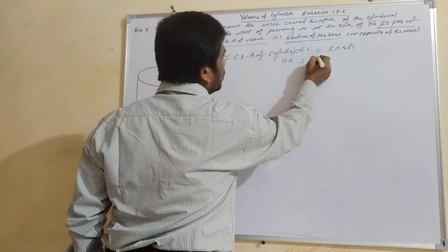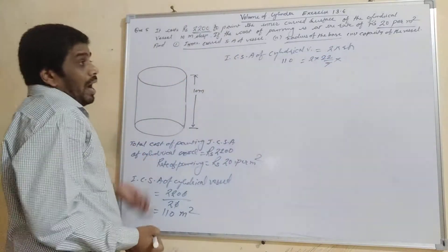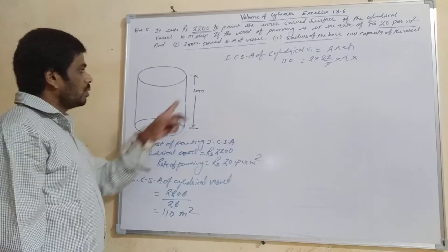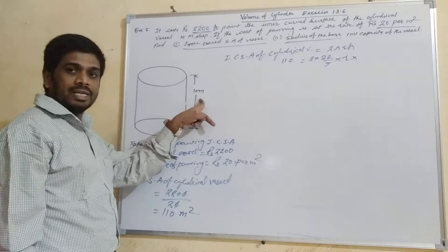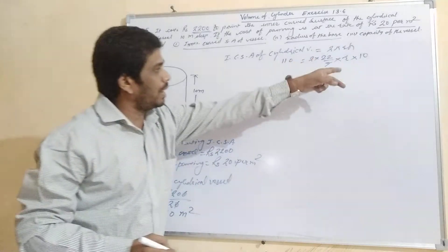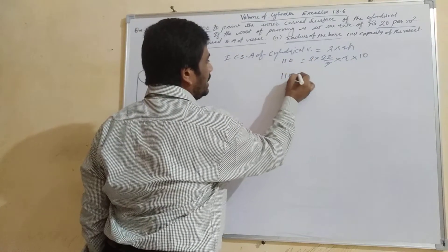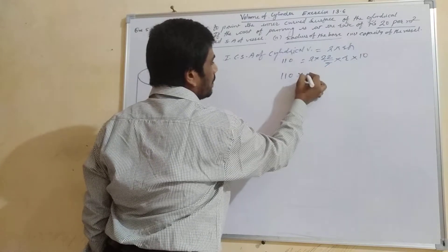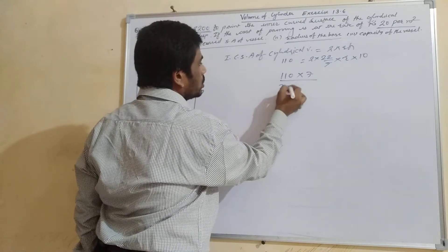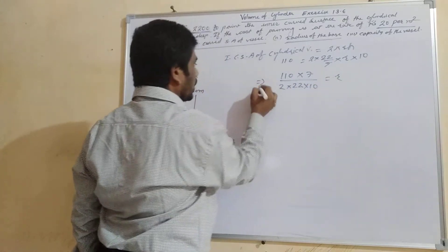This is the curved surface area of a cylinder. It is given as 110, so: 2 × (22/7) × R × H = 110. R is what we have to find. Height H is given as 10 meters. So except R, all values will shift to the other side: R = 110 × 7 ÷ (2 × 22 × 10).